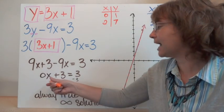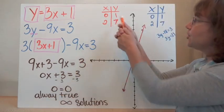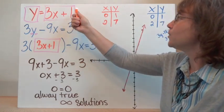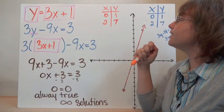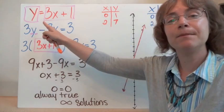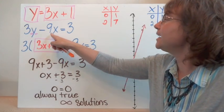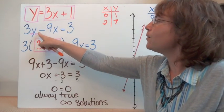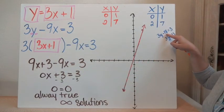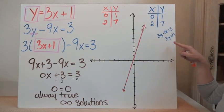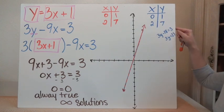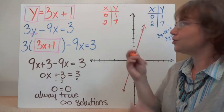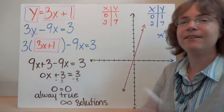Since 0 equals 0 is always true, this system has infinitely many solutions — any x will work. When we graph it, we graph the first equation by choosing two points: x equals 0 gives y equals 1, and x equals 2 gives y equals 7. For the second equation, plugging in x equals 0 gives 3y equals 3, so y equals 1 — it matches. Plugging in x equals 2 gives 3y minus 18 equals 3, so 3y equals 21 and y equals 7. The two coordinate points match, confirming it is the same line with infinitely many solutions.